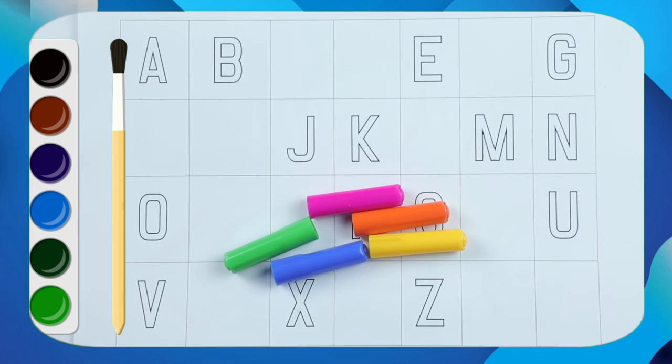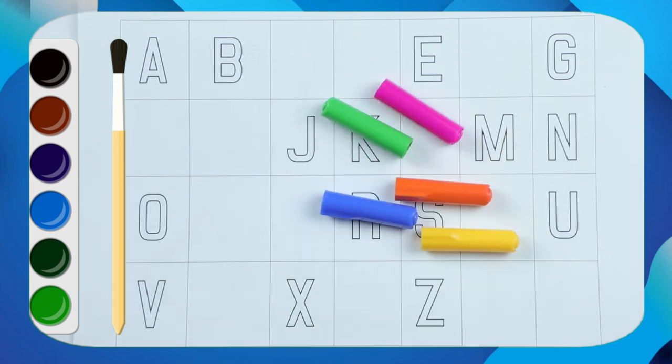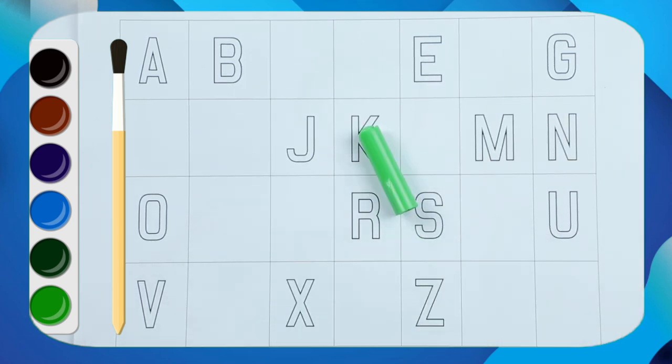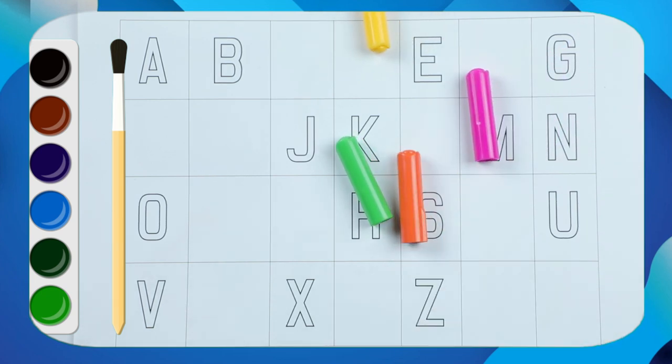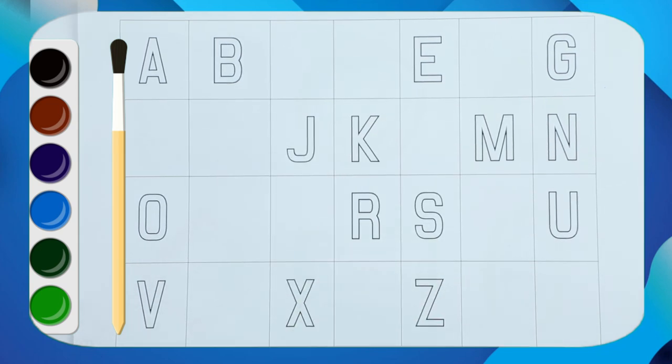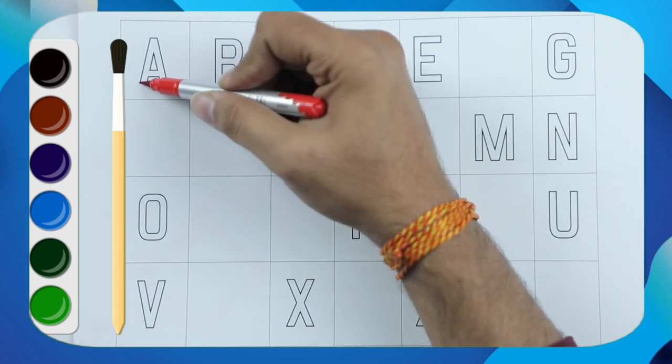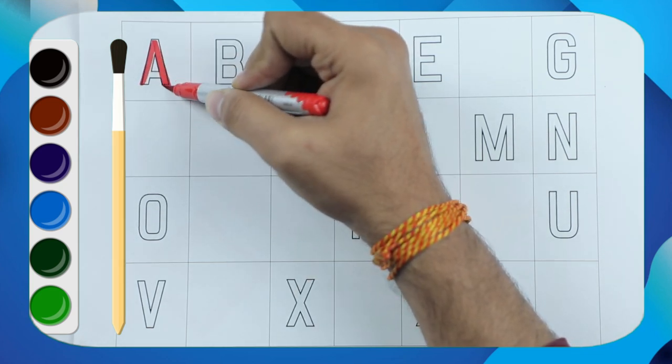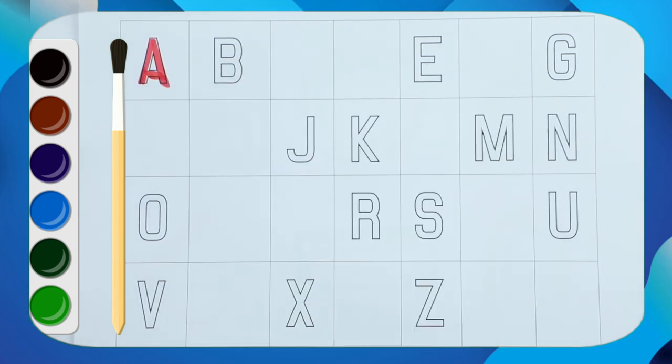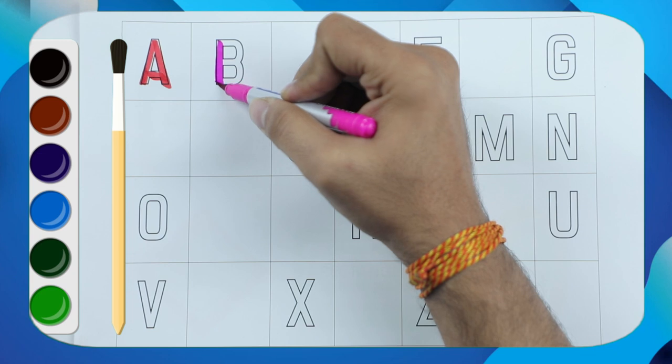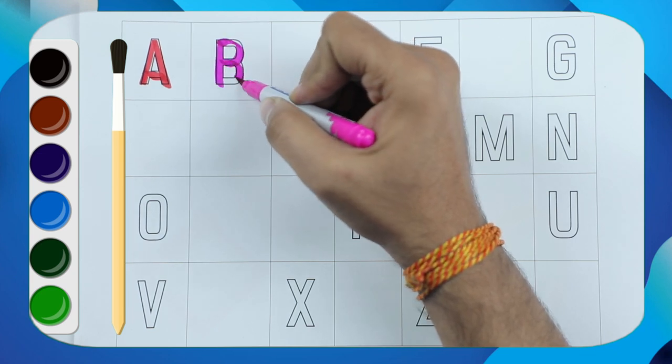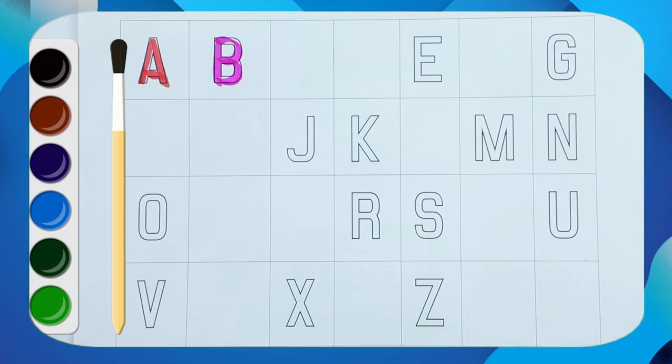Hello friends, today we learn alphabets with filling the blanks A to Z with some colors: green color, pink color, yellow color, orange color, blue color. Let's start. It's A, A for apple. B, B for ball. Now what's next letter? Tell me.